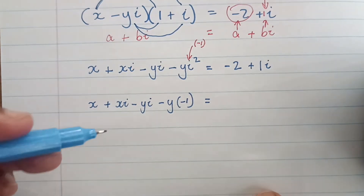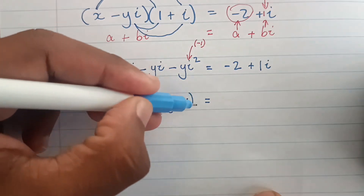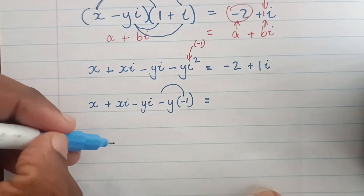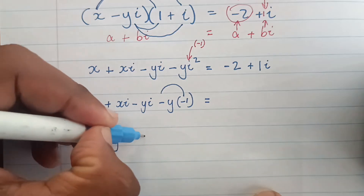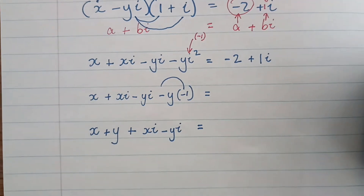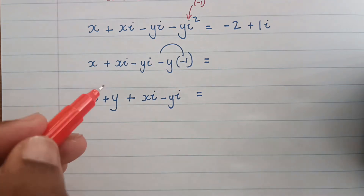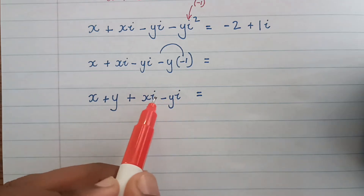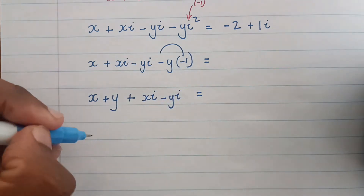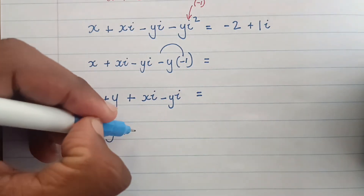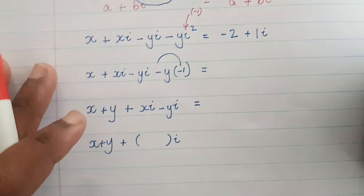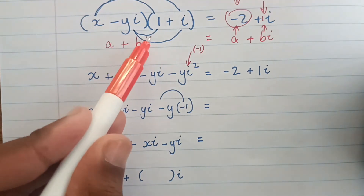After substituting i squared as minus one, minus times minus gives positive y. So we simplify to x plus y, and then we still have plus xi minus yi. Now I can clearly see the real component, but for the imaginary component there are two i terms, so I'm going to take i out as a common factor — placing i after the bracket so it looks like the form bi.